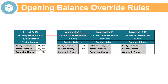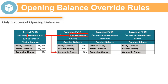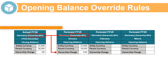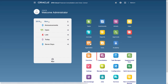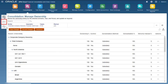If ownership management is enabled, the change in ownership percentage for the first period is calculated as the difference between the first period ownership percentage in the current scenario and the last period ownership percentage for the prior year in the source scenario. Opening balances for periods other than the first period are not affected by opening balance override rules. To create opening balance override rules, navigate to the Consolidation Process page and select Opening Balance Carry Forward.